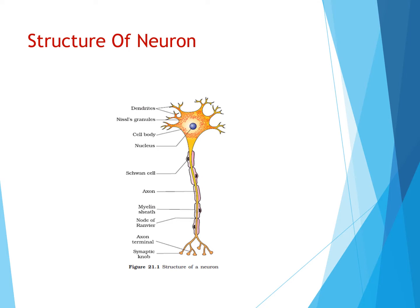The axon is covered with a fatty tissue called the myelin sheath. It is an insulating sheet covering the long axons of the nerve cells.